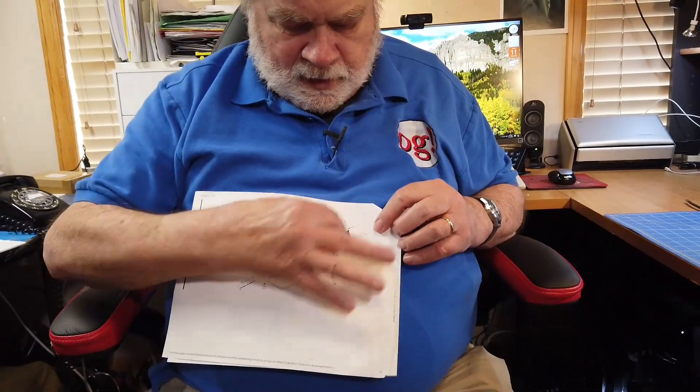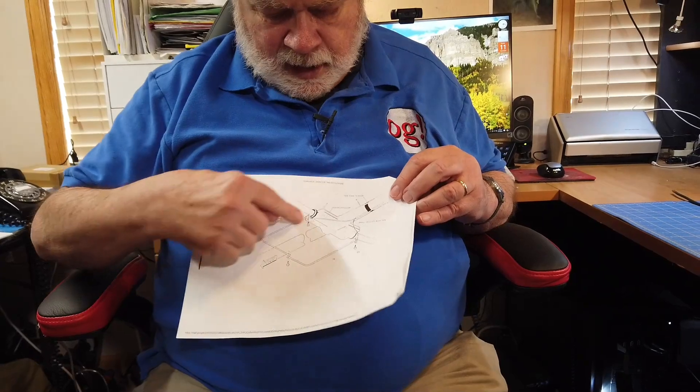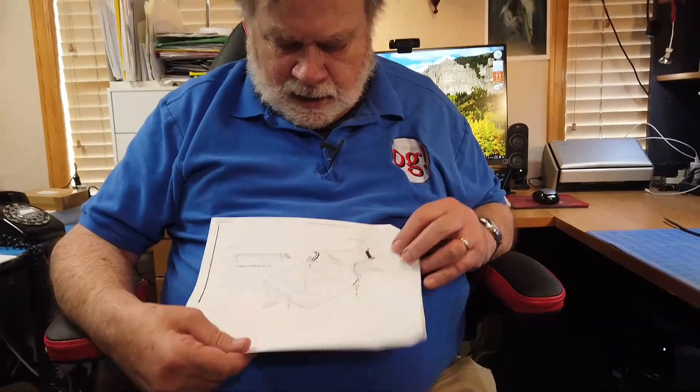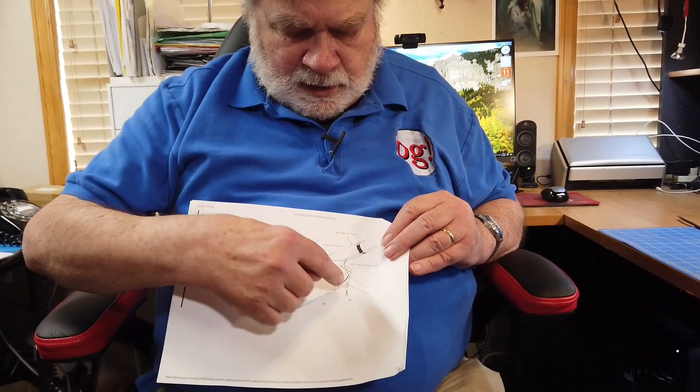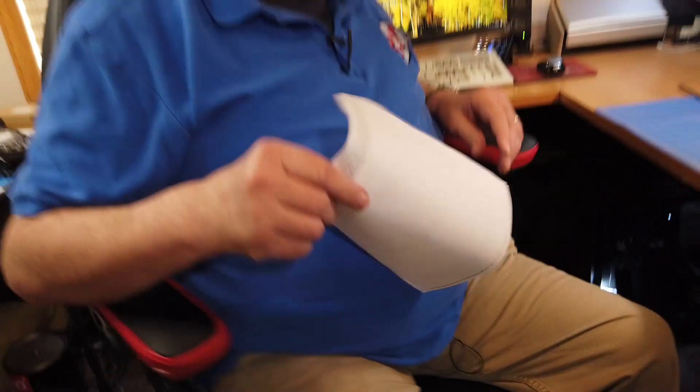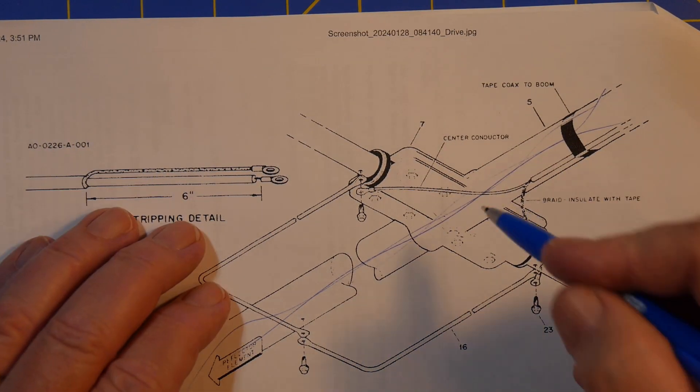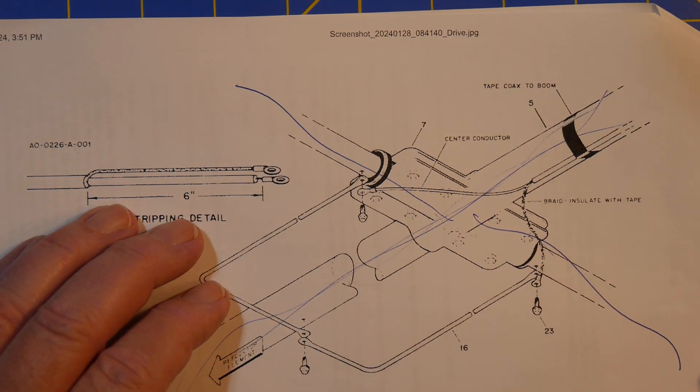This is, I think, the A3. And it shows in here how the connections are supposed to be made. There's no provision in here for an un-un, although you could certainly do that. This feed right here is a balanced feed. So we're feeding that with unbalanced. And what it says to do, here I'll show it under the overhead camera. What this thing says to do, this is the boom of the antenna. This is the driven element over here.